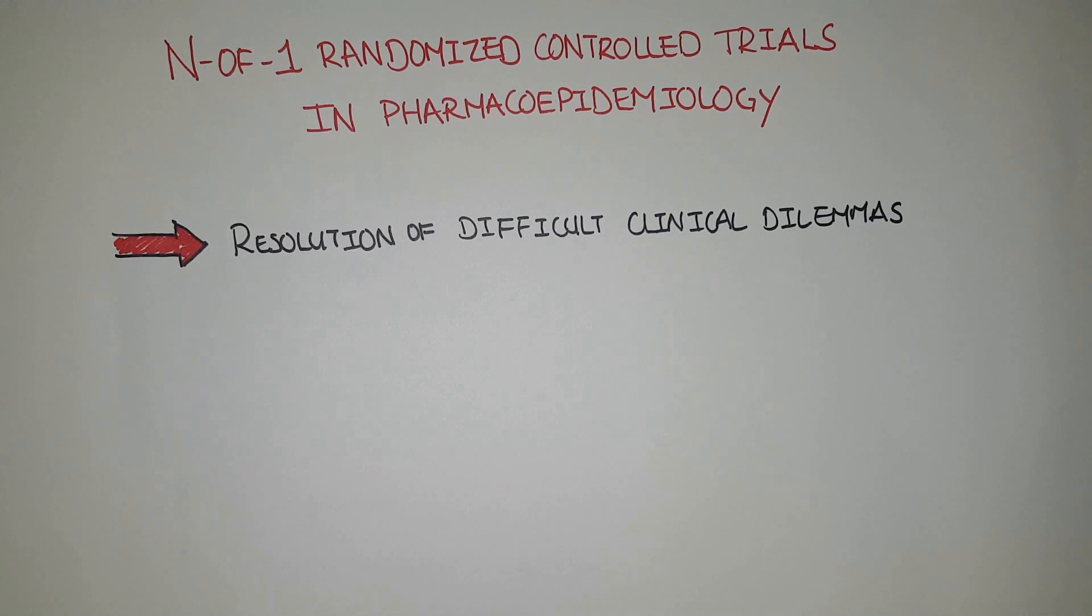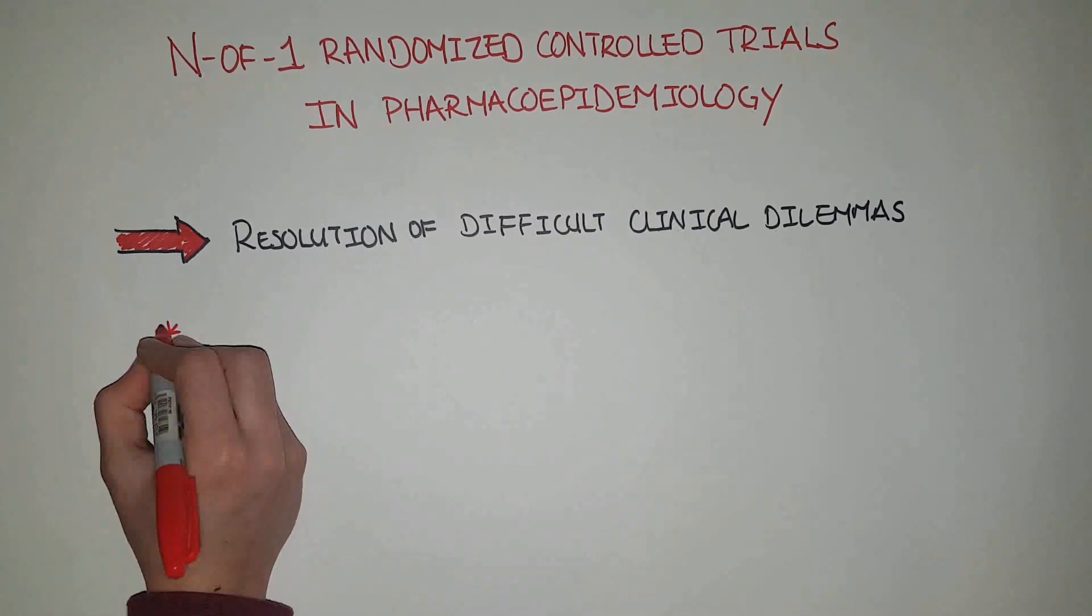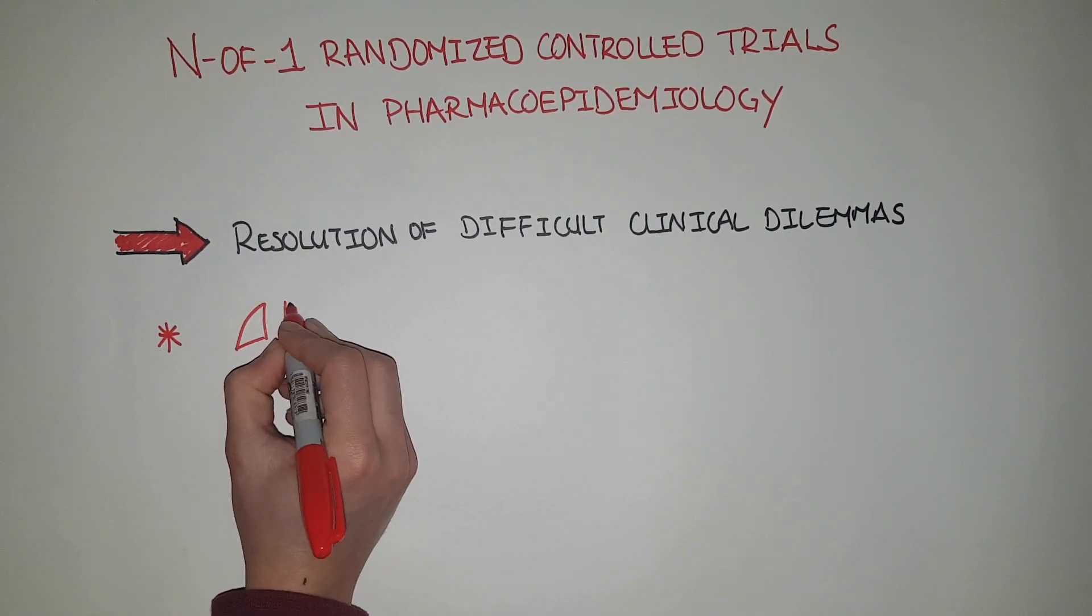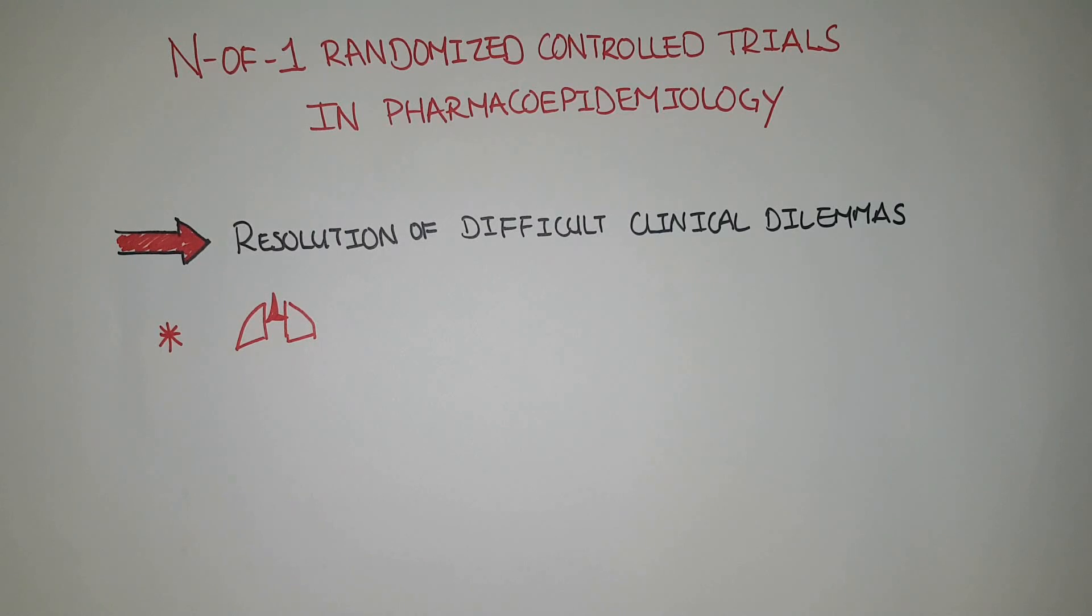The most rigorous test of usefulness of this design would be a randomized controlled trial of N-of-1 randomized controlled trials. In fact, three such RCTs have actually been conducted, involving randomization into either conventional care or an N-of-1 RCT. Two of the three assessed the use of theophylline in patients with chronic airflow limitations.